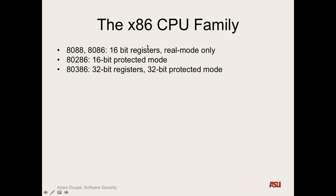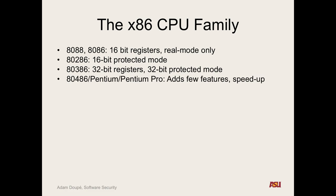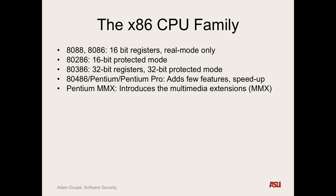Why is moving from 16-bit to 32-bit such a big deal? We can address 2^32 bytes of memory instead of just 2^16. The same reason going to 64-bit is so nice — we get access to a much wider range of memory. Further features were added, including faster speed and multimedia extensions. x86 didn't remain constant — it's continually being added to.